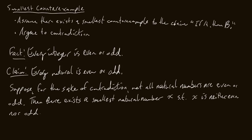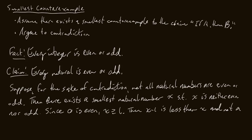Since 0 is even, x is greater than or equal to 1. Now we've covered our cases. Then x minus 1 is less than x and not a counterexample — now we can make that claim. Thus, x minus 1 is even or odd. We've got to break our proof up into cases: the case where x minus 1 is even, and the case where x minus 1 is odd. If we get a contradiction in all cases, then our supposition must be false.